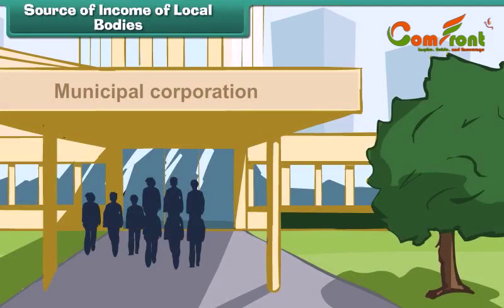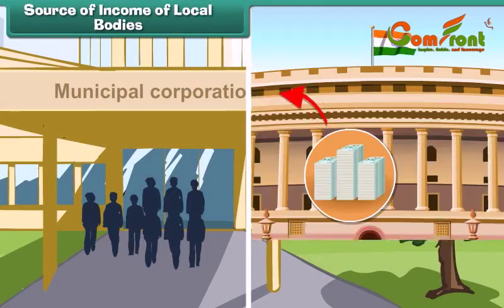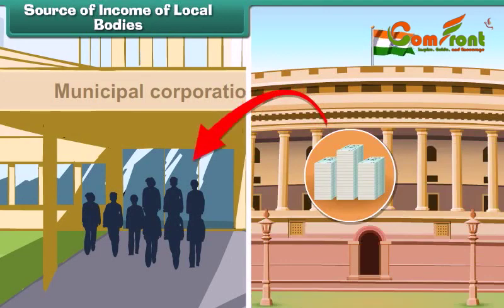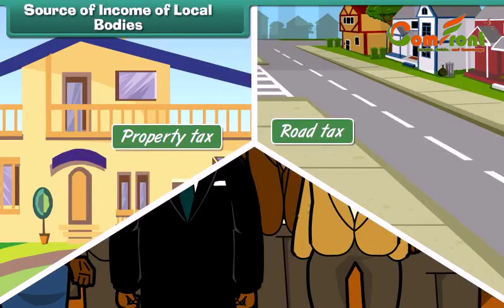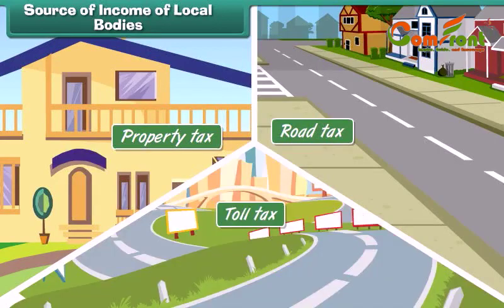Local bodies get money for provision of services from the respective state governments. The state governments in turn get the money from their citizens through property taxes, road taxes and toll taxes.